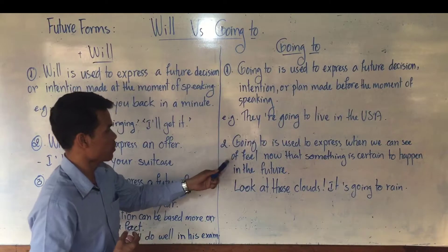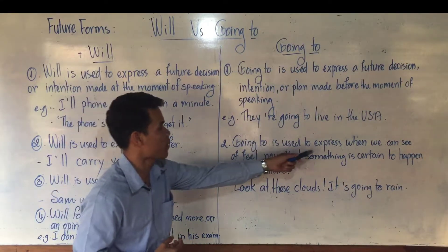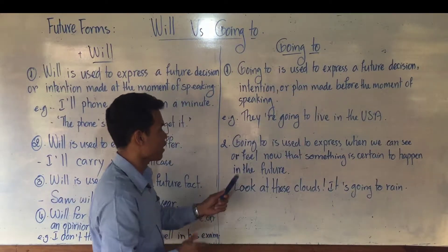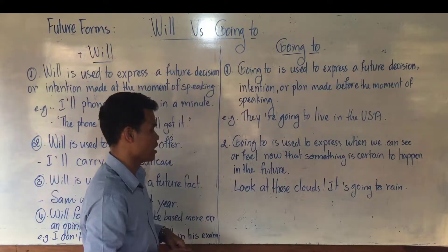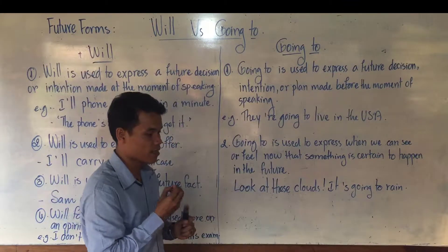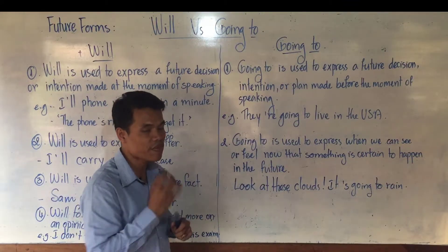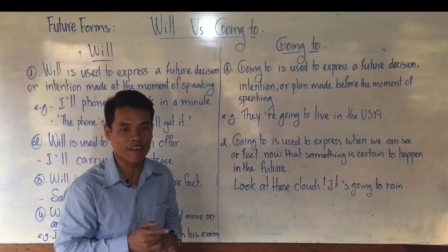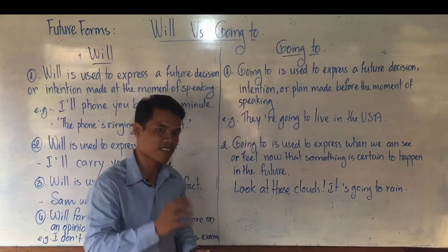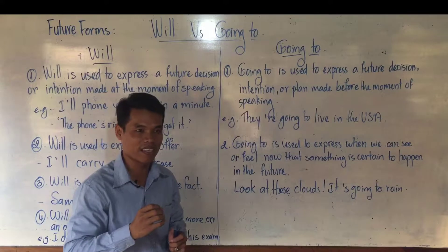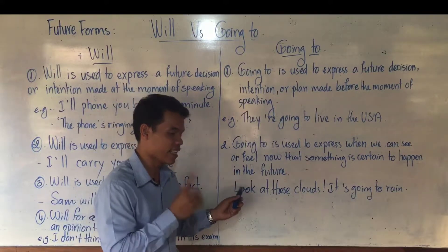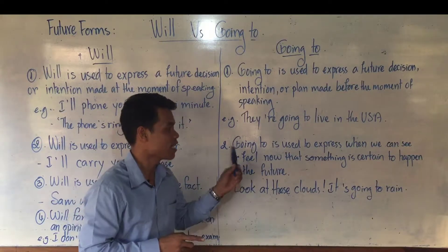How about going to? Going to is used to express when we can see or feel now that something is certain to happen in the future. This shows evidence — a present fact. For example: 'Look at the clouds — it's going to rain.' You can see it now; it is almost raining, the rain is about to drop. It is called a present fact, based on evidence.